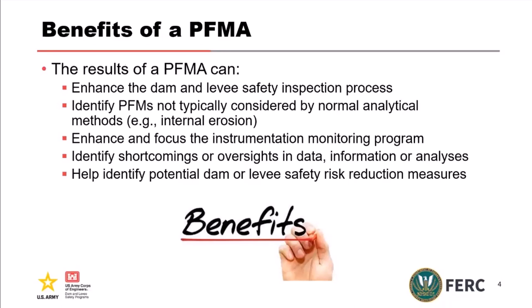The PFMA can identify shortcomings, oversights, and gaps in data or limited information. We might go through a failure mode and realize we have no information to evaluate it — for example, foundational liquefaction when we have no blow counts on the foundation. It can also identify potential dam or levy safety risk reduction measures. As we go through the failure mode process for each failure mode, we want to think about how we could reduce the likelihood of failure and what interventions might help — thinking a bit more outside the box.